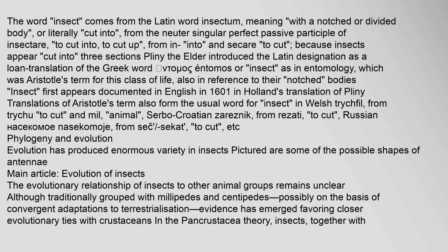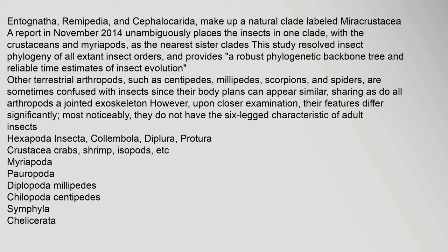In the pancrustacea theory, insects, together with Antognatha, Remepedia, and Cephalocorita, make up a natural clade labeled Miracrustacea. A report in November 2014 unambiguously places the insects in one clade with the crustaceans and myriapods as the nearest sister clades. This study resolved insect phylogeny of all extant insect orders, and provides a robust phylogenetic backbone tree and reliable time estimates of insect evolution.